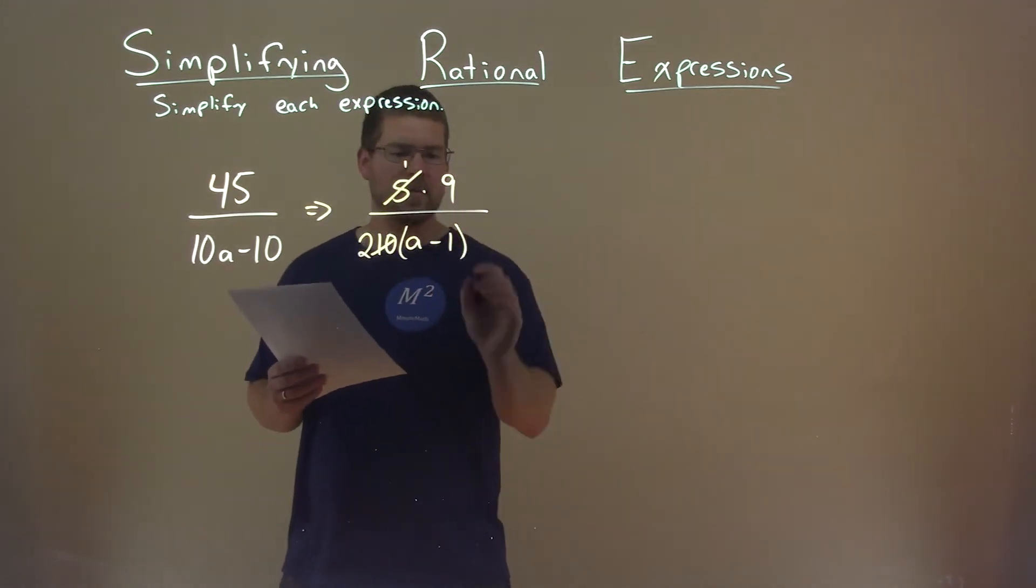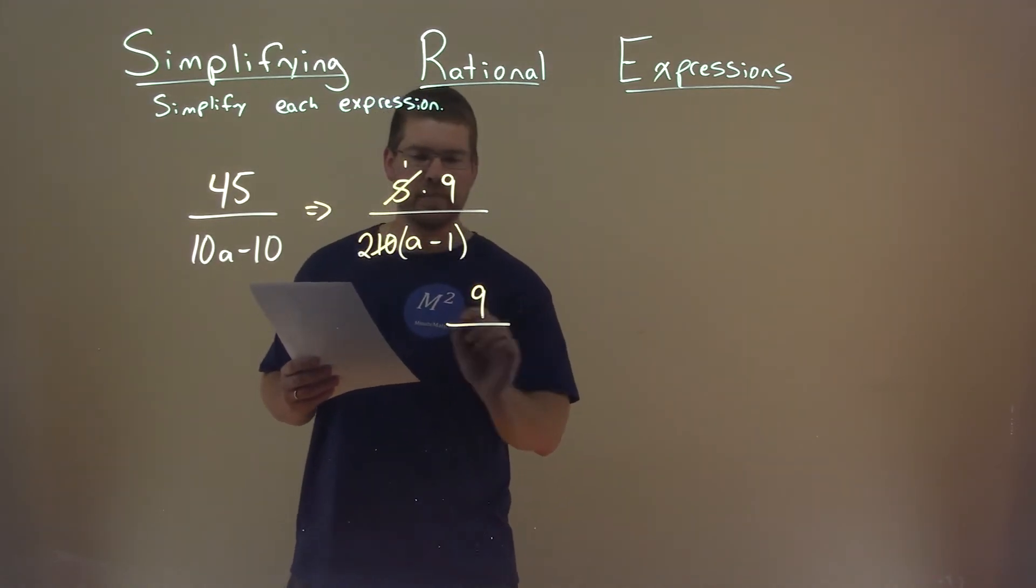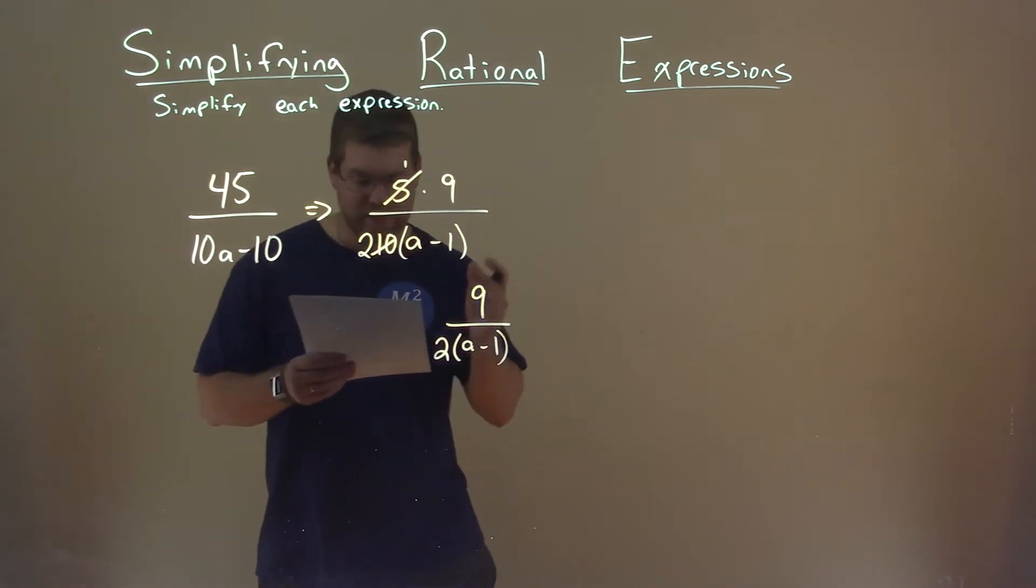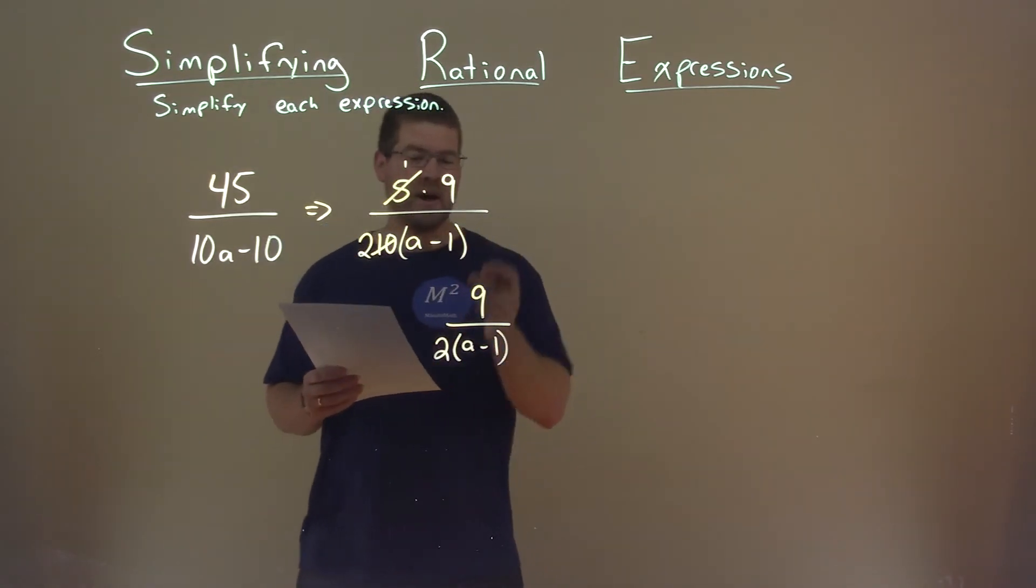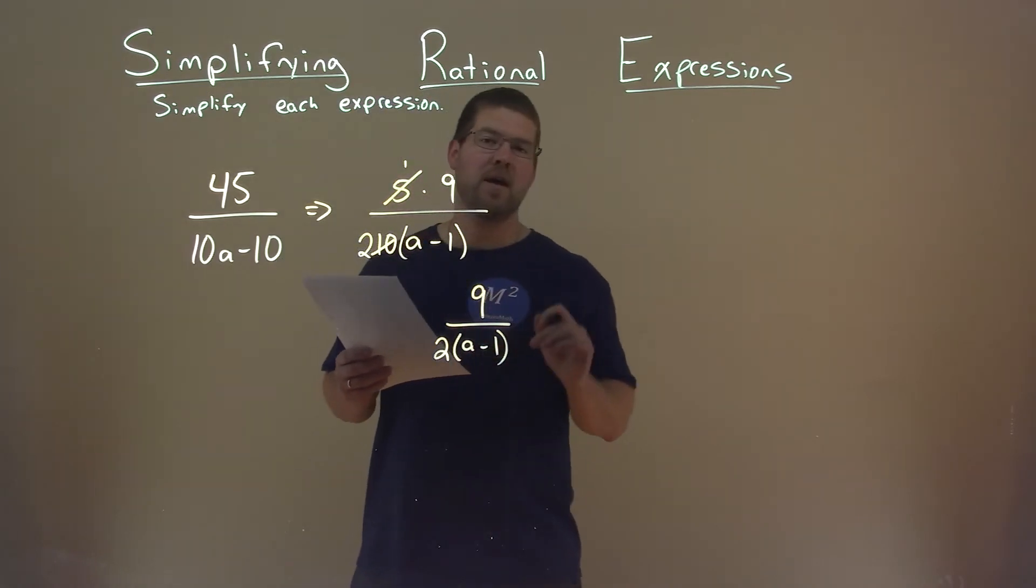So 1 times 9 is 9 in the numerator, 2 stays out there, we have a minus 1, and actually that's our final answer, 9 over 2 times a minus 1.